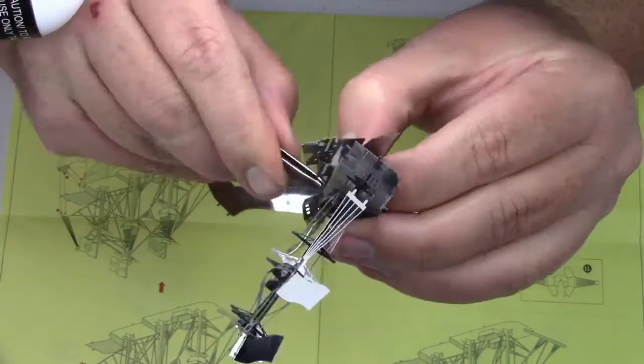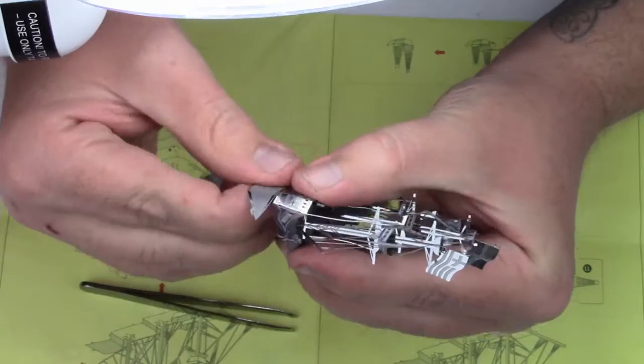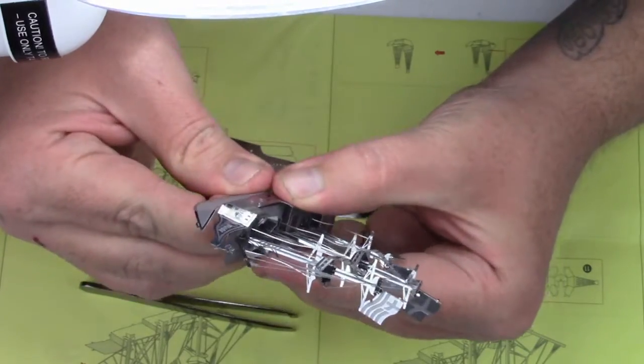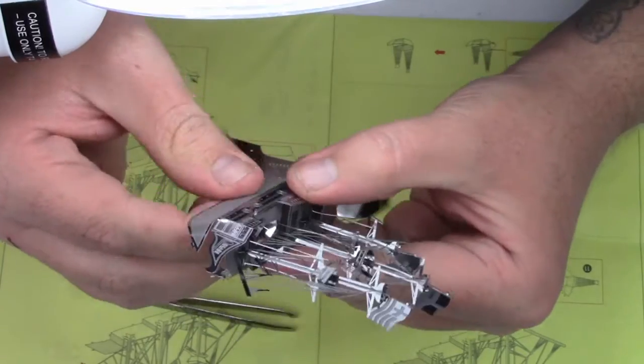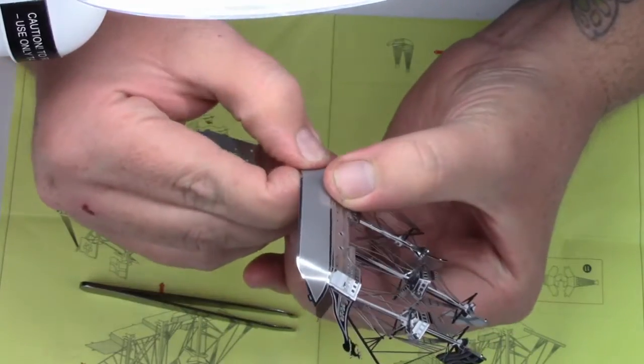When putting the bottom of the ship on, I twisted some, not all the tabs, just enough to hold things still. When I got the two sides together, I went back and folded over the rest of the tabs, then untwisted and folded over the tabs I had twisted.